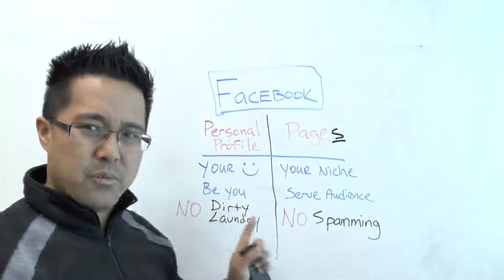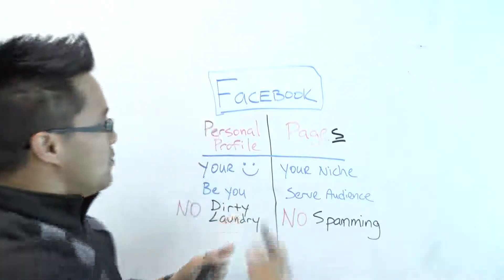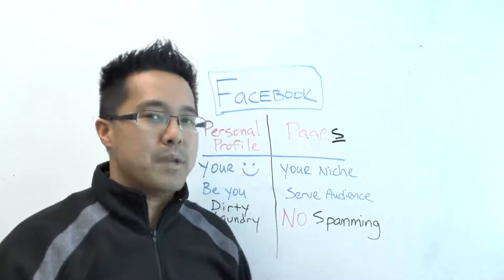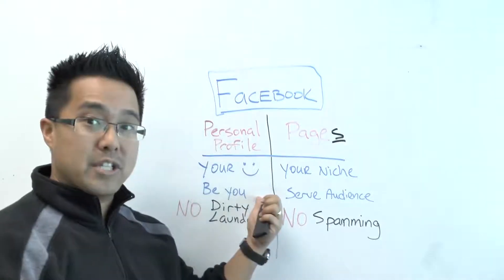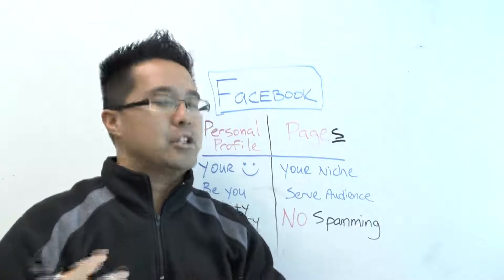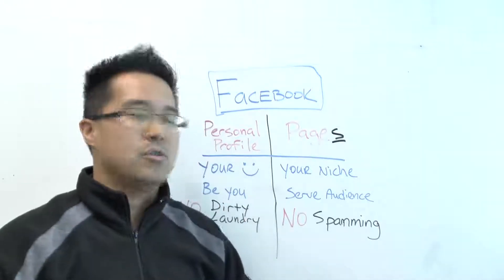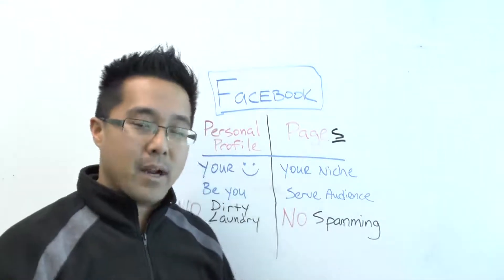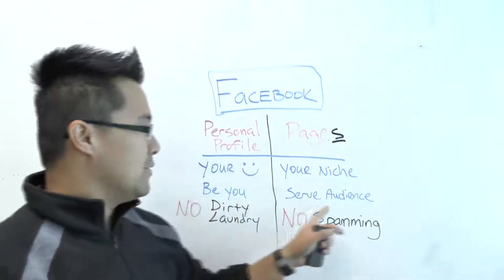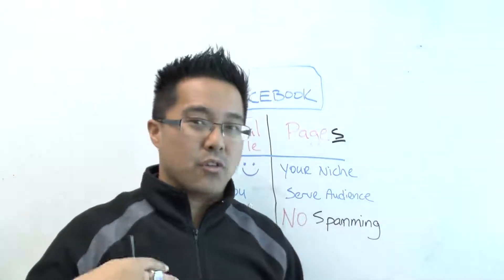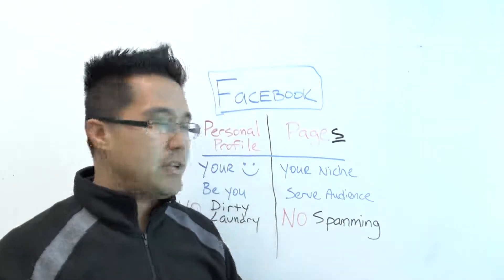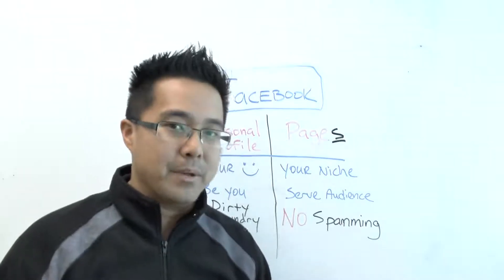Next one — be you. Be you. When people connect with you on Facebook, yeah, it might be for business, but why don't you just be yourself? If you be yourself, you'd be surprised how many people are just naturally attracted to you. You're not here to impress everybody. You're not here to sell something to everybody. You're here to connect and solve people's problems. Be you. The same thing goes for pages, but you want to serve the audience. Your audience isn't there yet — you can't physically go and friend people as a page.